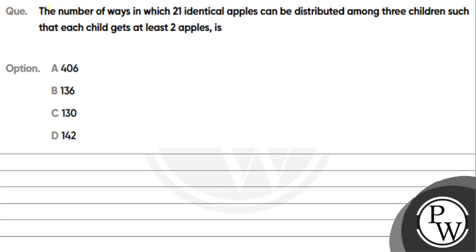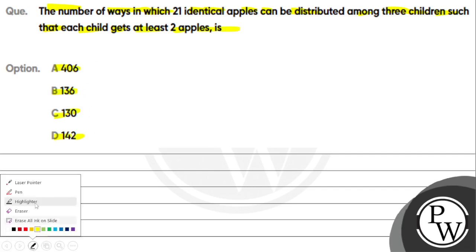The question is: the number of ways in which 21 identical apples can be distributed among three children such that each child gets at least two apples. The options are 406, 136, 131, and 142.